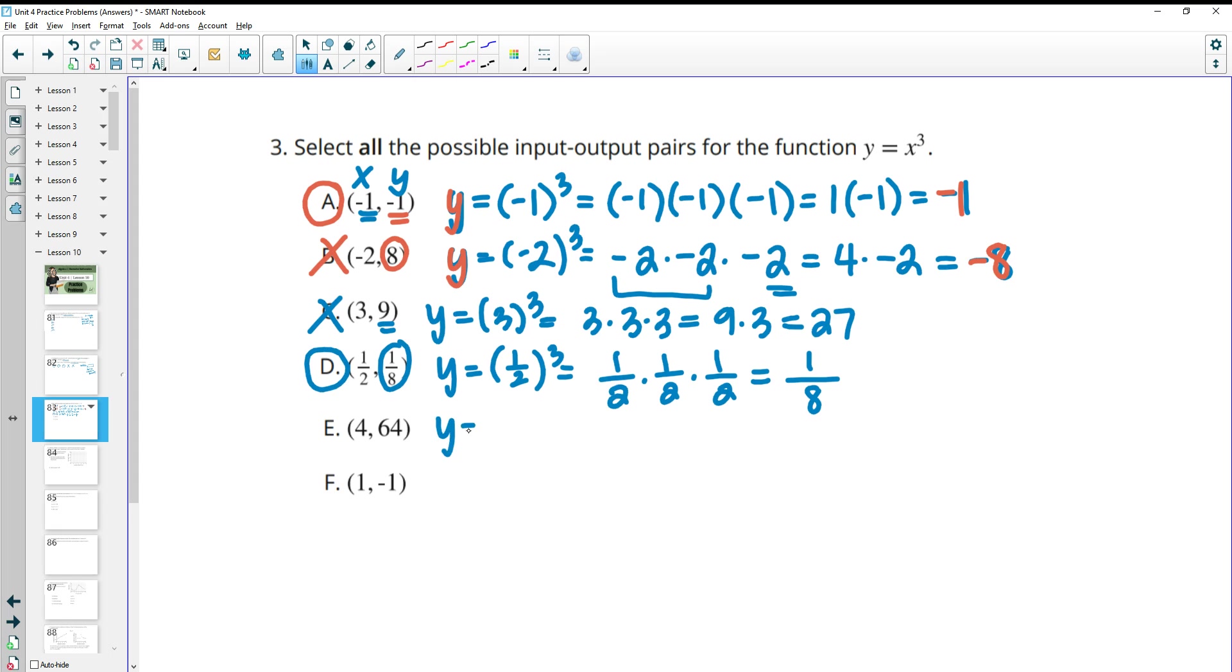E, we're going to get 4 cubed. And 4 cubed is 4 times 4 times 4. 4 times 4 is 16 times 4 again gives us 64, which is what they said here. So that's good.